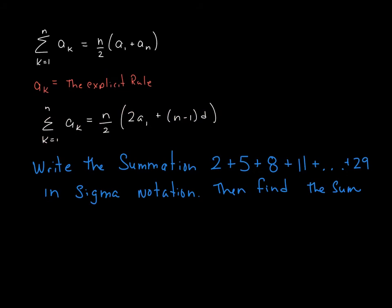All right, so in order to write the summation of 2 plus 5 plus 8 plus 11, and we don't know how many terms are here, plus 29 in sigma notation, and then find the sum. So the first thing we need to do with that is find the explicit rule.